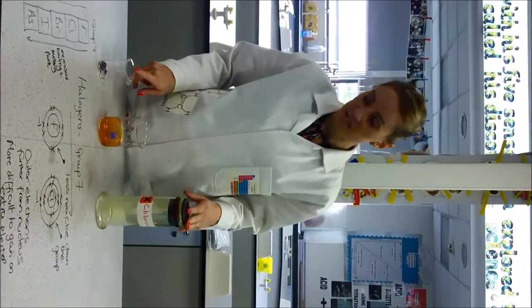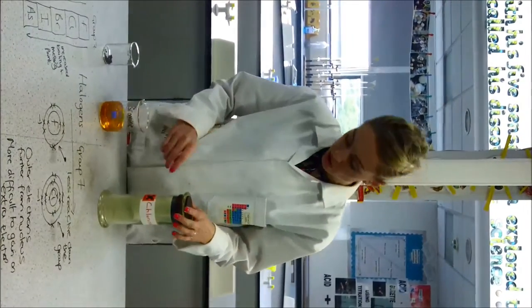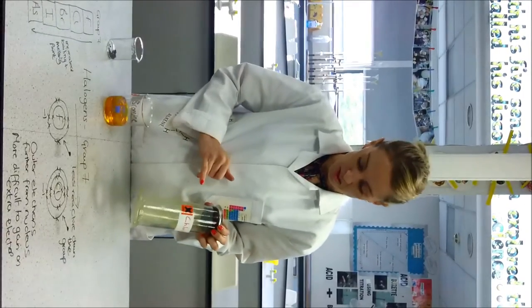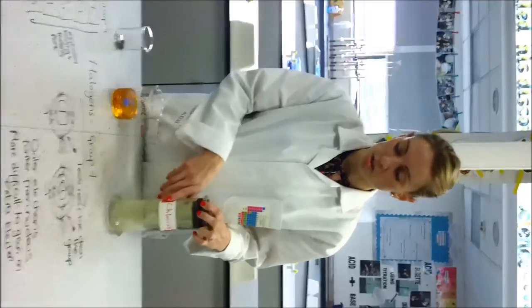So the main halogens you need to know about are iodine, a grey solid at room temperature, bromine, an orange liquid at room temperature, and chlorine, a greeny yellow gas at room temperature. And note that chlorine is extremely toxic.